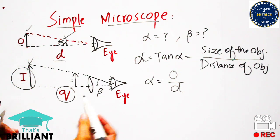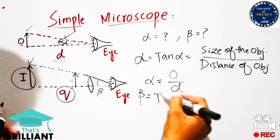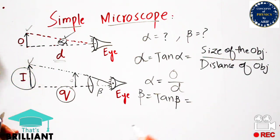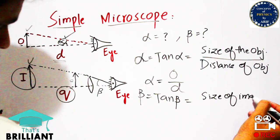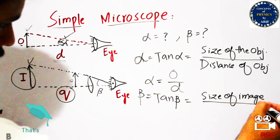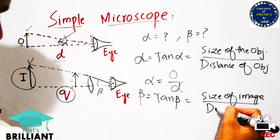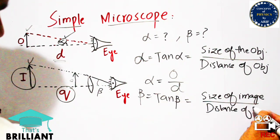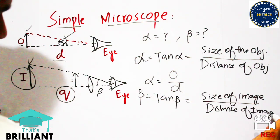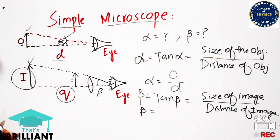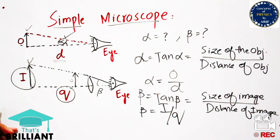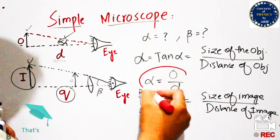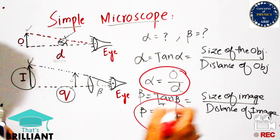In the other case, calculating angle beta, which equals tan beta: it follows the same approach but uses the size of the image with respect to the distance of the image. The size of the image is represented as I and the distance of the image is represented as Q. So beta = I/Q. These are the expressions from which angles alpha and beta can be calculated.